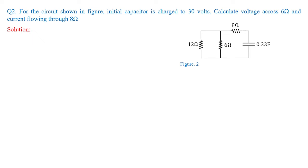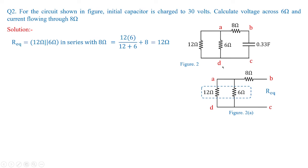Now let us go to the homework problem. The capacitor value is the same — 0.33 farads — but it is charged to 30 volts initially. Calculate the voltage across 6 ohms and the current flowing through 8 ohms. Note that voltage across 6 ohms and 12 ohms will be the same since they are in parallel. Framing terminals A, B, C, D: with 12 and 6 in parallel and in series with 8, R equivalent equals 12 ohms. The time constant tau equals R equivalent times C, giving tau equal to 3.96 seconds.